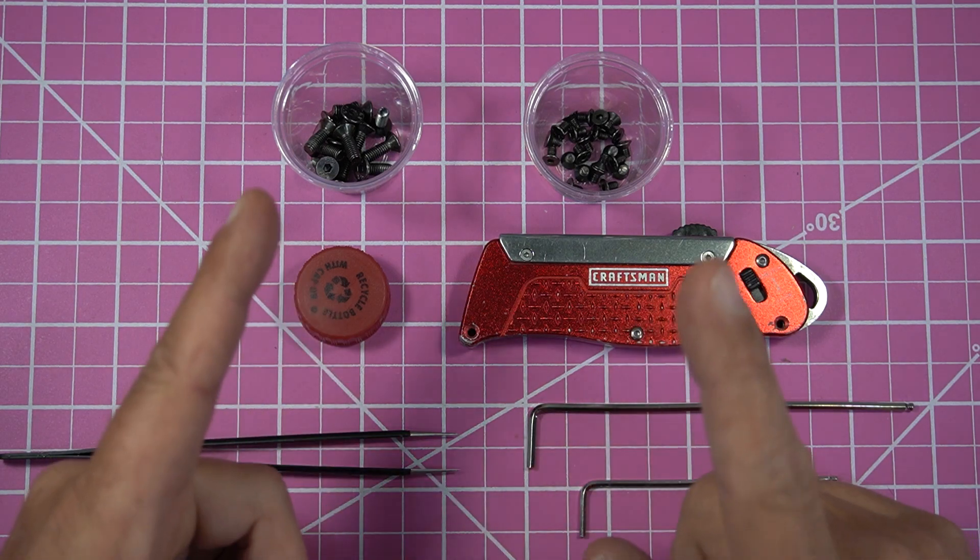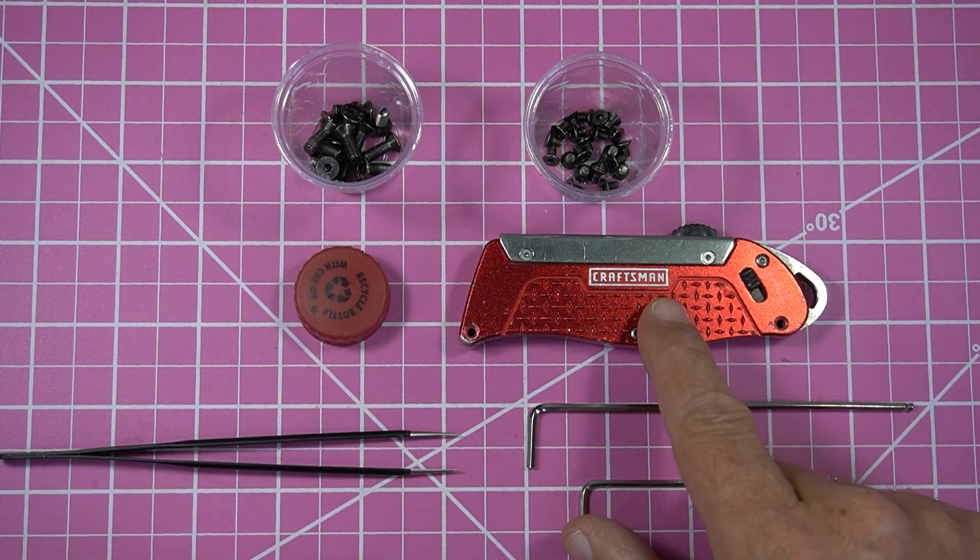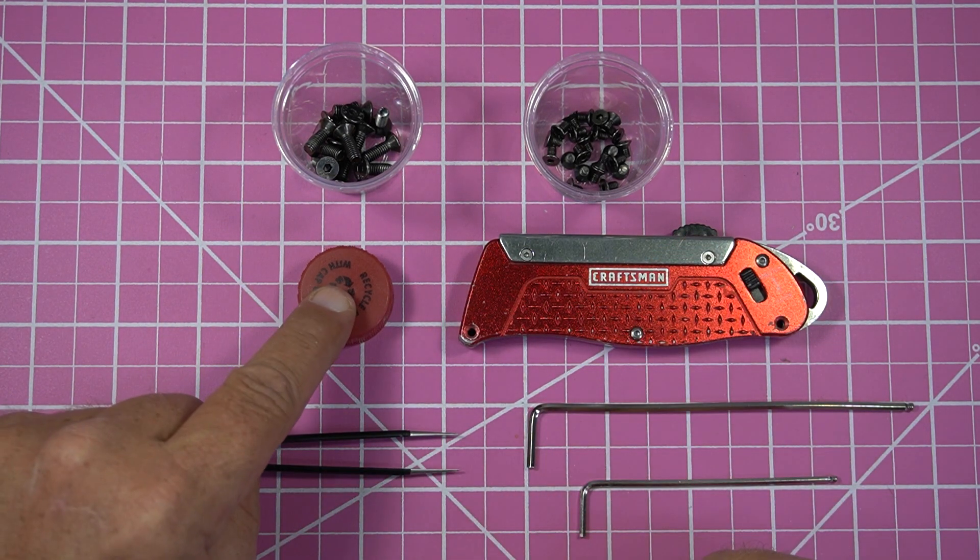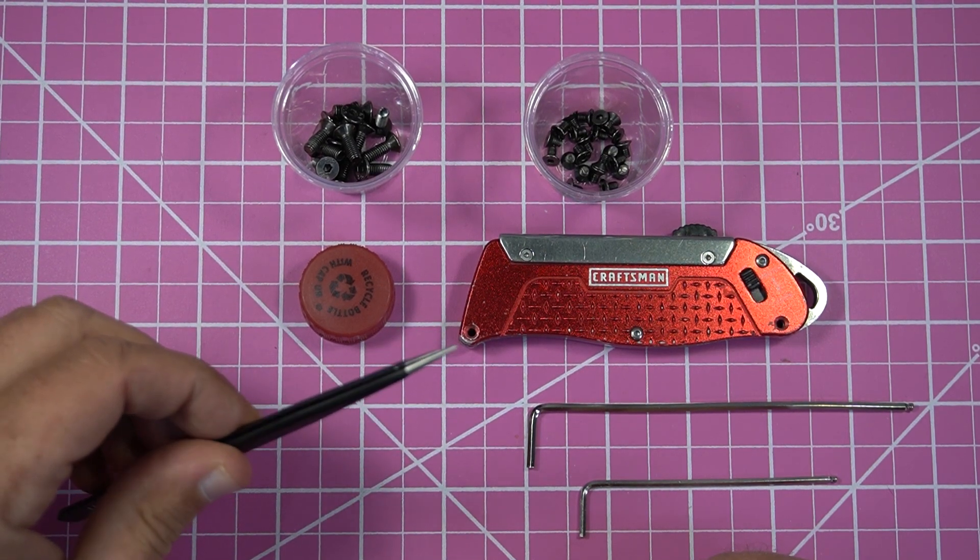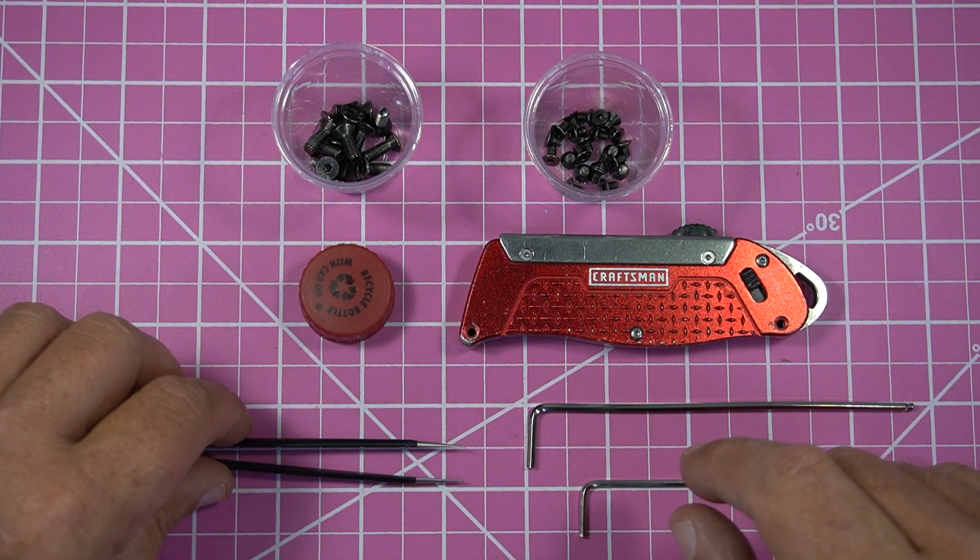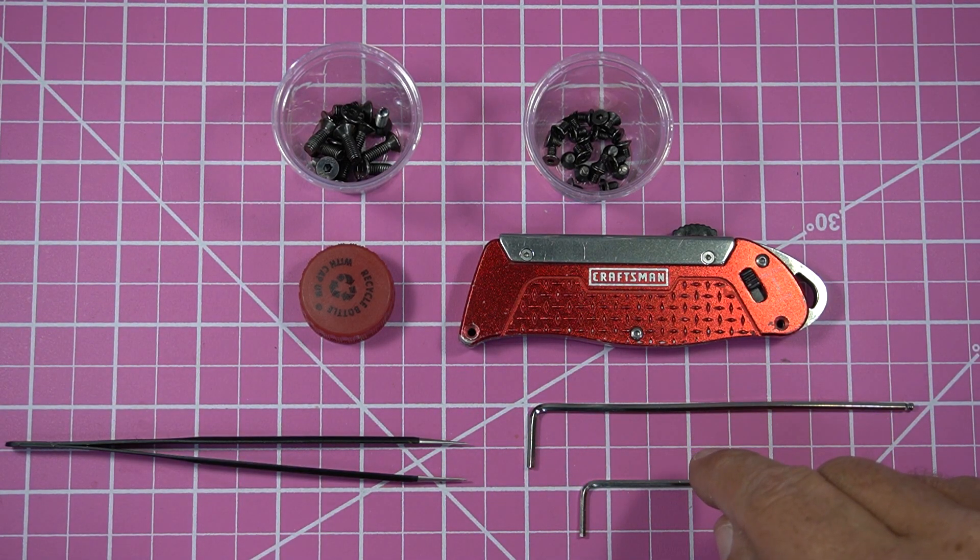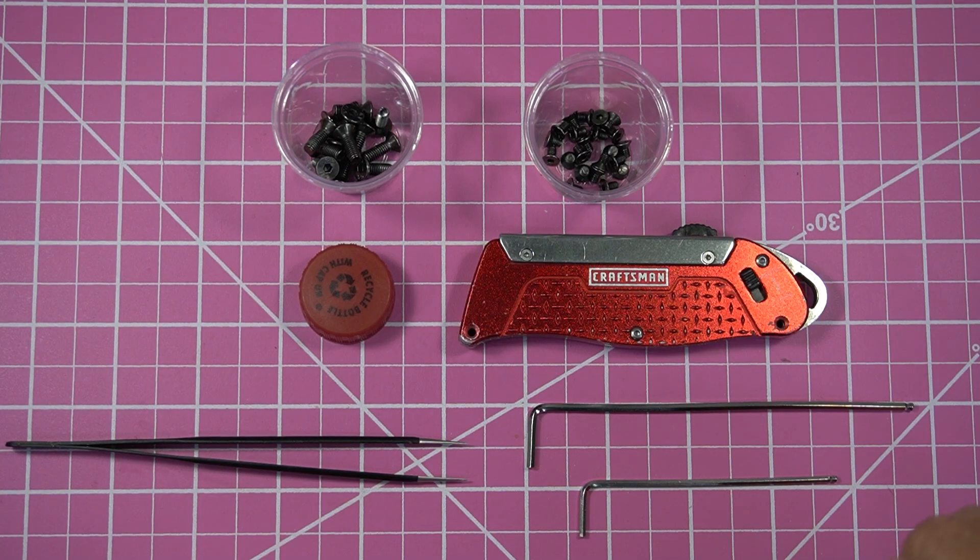Things that we're going to need for this project: the screws that we took off the vat, a utility knife, a bottle cap that's about 13 millimeters in height, antistatic tweezers that have a very sharp point on them, and also our 2.5 and 2.0 wrenches.